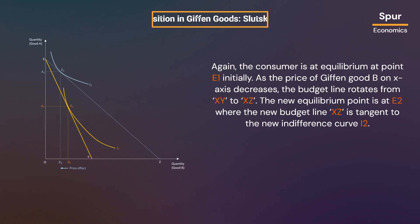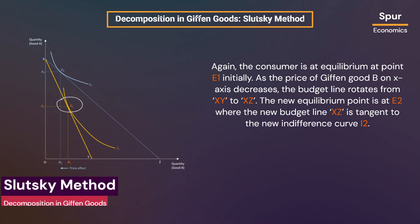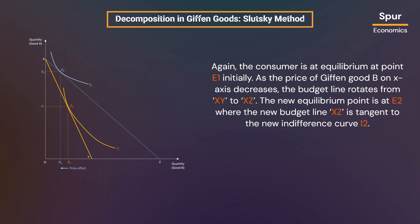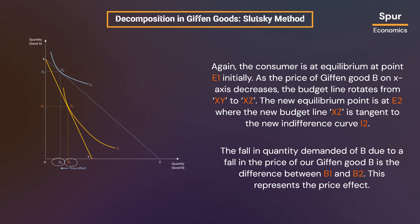Now, let us illustrate the Slutsky method of decomposing the price effect for Giffen goods. Again, the consumer is at equilibrium at point E1 initially. As the price of Giffen good B on the x-axis decreases, the budget line rotates from XY to XC. The new equilibrium point is at E2 where the new budget line XC is tangent to the new indifference curve I2. The fall in quantity demanded of B due to the fall in price is the difference between B1 and B2, representing the price effect.